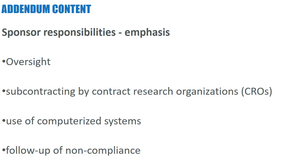ICH E6R2 also emphasizes oversight of subcontracting. Interestingly, if your contract research organization is subcontracting — say, a CRA in Uzbekistan because they don't have one there — and they contract another CRA who isn't one of their employees, then you as the sponsor should: one, know about it; two, actually approve it; and three, be absolutely convinced that whoever they've contracted is correctly trained, has the right CV and is acceptable. And there must be a way for this person to be monitored, with correct reports confirming that monitoring takes place.